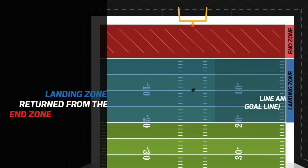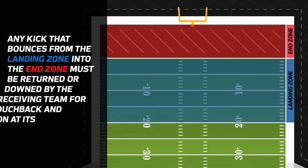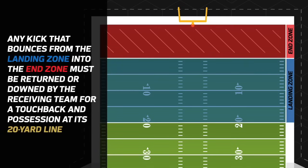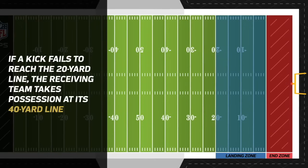The landing zone is the red zone — from the 20 yard line on in. If the ball hits the landing zone and rolls into the end zone, it is a touchback to the 20 yard line. Any kick that hits the landing zone must be returned. They are trying to prevent touchbacks, so if you let the ball roll into the end zone, you won't get great field position — only the 20 yard line, opposed to the old 25 yard line touchback.